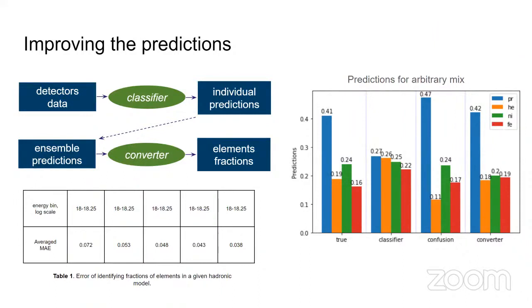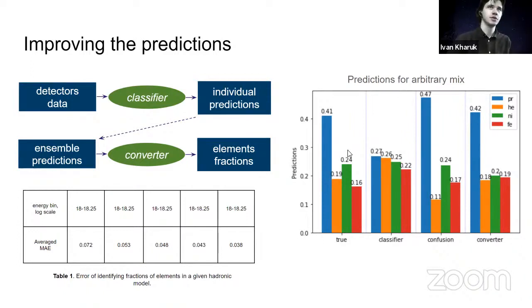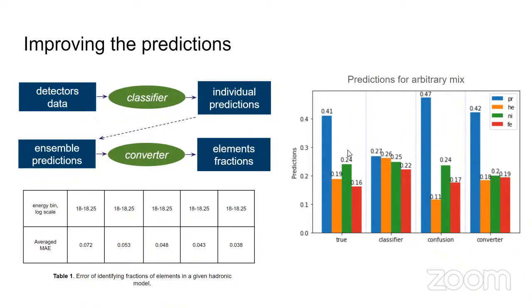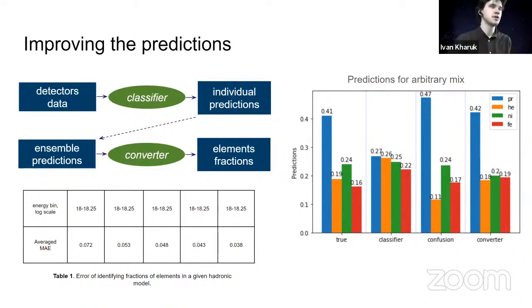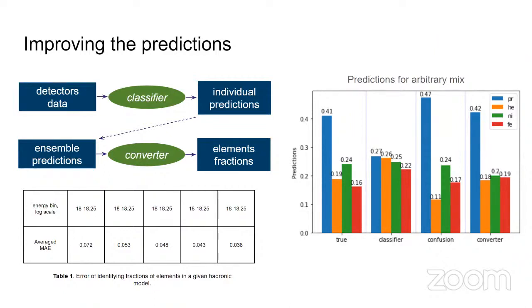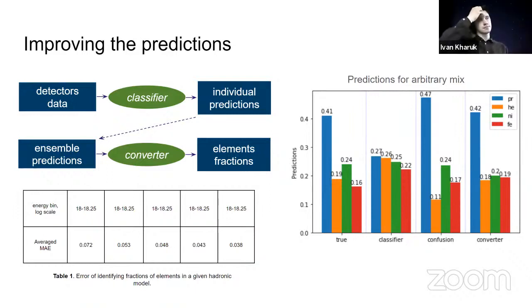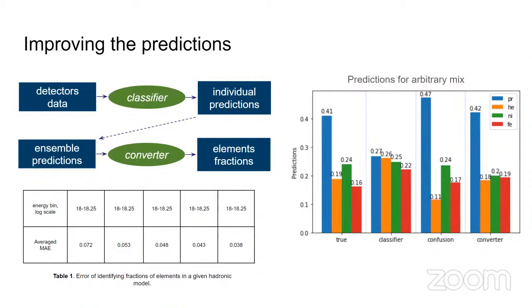But this can also result into problems, right? Because you have to interpret your data with a specific hadronic interaction model, right? Your interpretation of your composition will depend on the underlying hadronic interaction model. Yeah. We currently didn't get rid of the corresponding systematic model error. Yeah, this is very challenging. I see. Yes. Many thanks for your explanations.